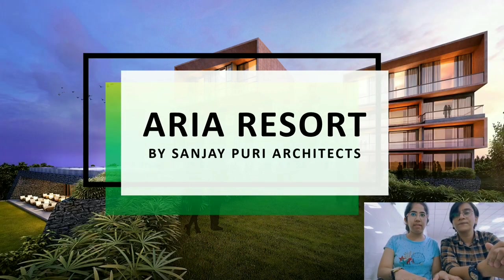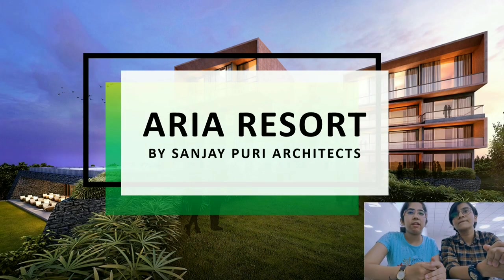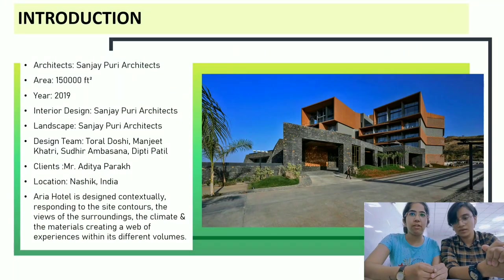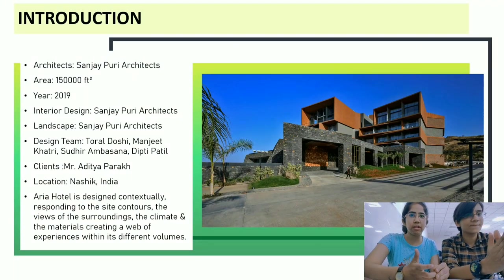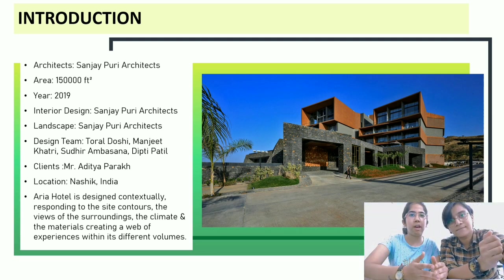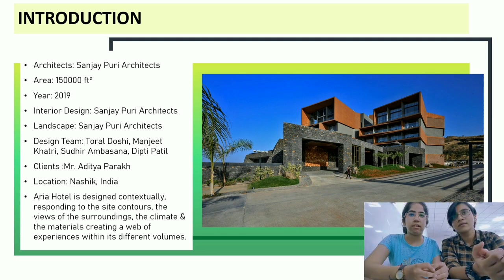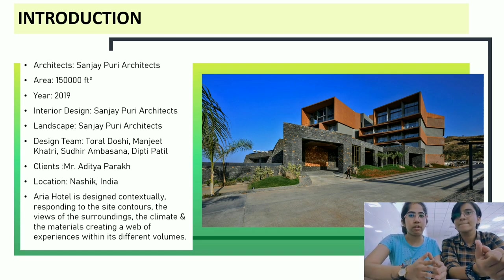Today we will be discussing about one of my favourite projects by Architect Sanjipuri. The project is done by Architect Sanjipuri, and the area is around 150,000 square feet. It's a recent project, just completed in 2019. The interior was also done by Architect Sanjipuri, and the landscape too. The location of the project is Nashik, India.